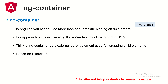Let's start with ng-container first. In Angular, you cannot use more than one template binding on an element. Most often, you cannot use two bindings on the same element inside the template. One way to fix that is adding an extra div, but that adds redundancy in your DOM. Instead, we can use the ng-container element — that way you don't have to add an extra div. Think of ng-container as an external parent element used for wrapping child elements, which is not visible in your DOM.